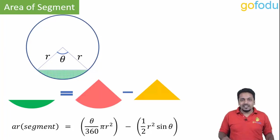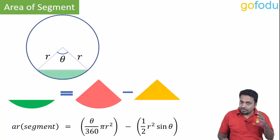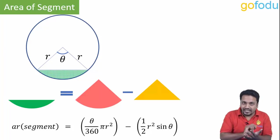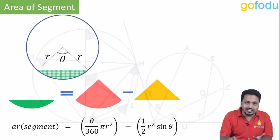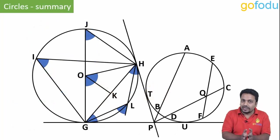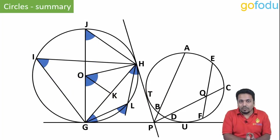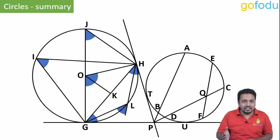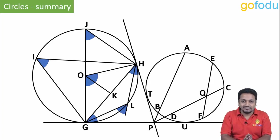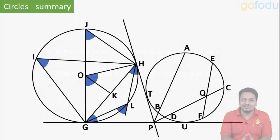With this, we are done with the circles part. Now take a paper and a pen and write down all the properties that come to your mind on looking at this figure. Match all the properties that you have written with the list given in the description and see if you got them all. That's all for this video. Thank you.